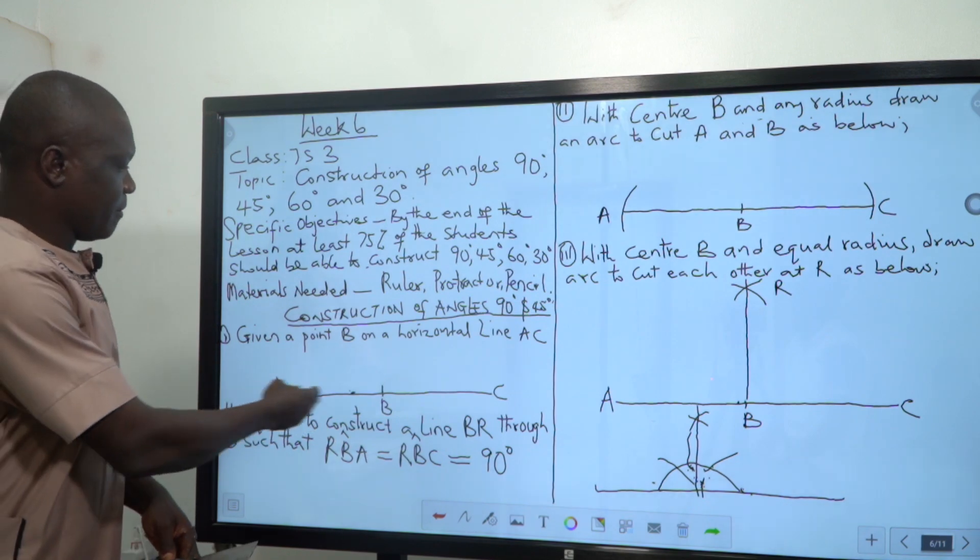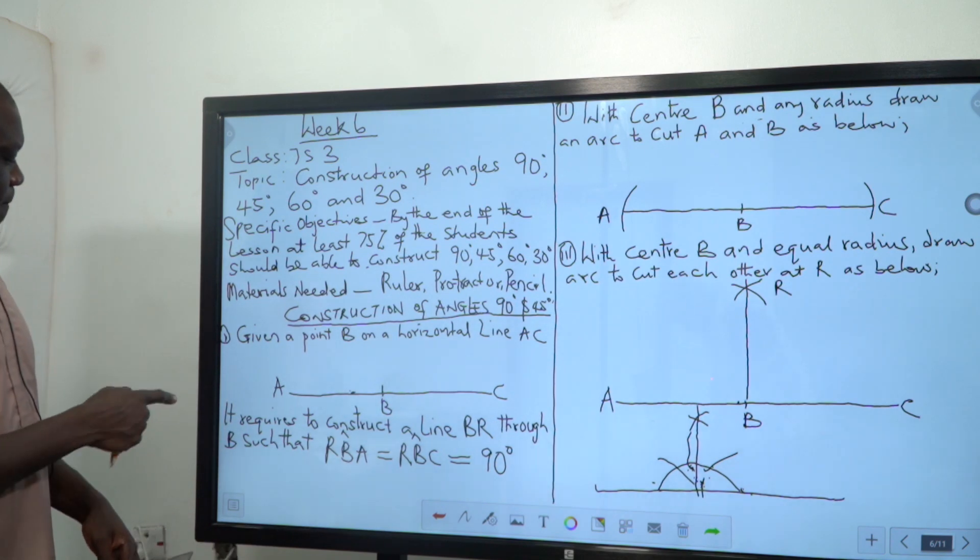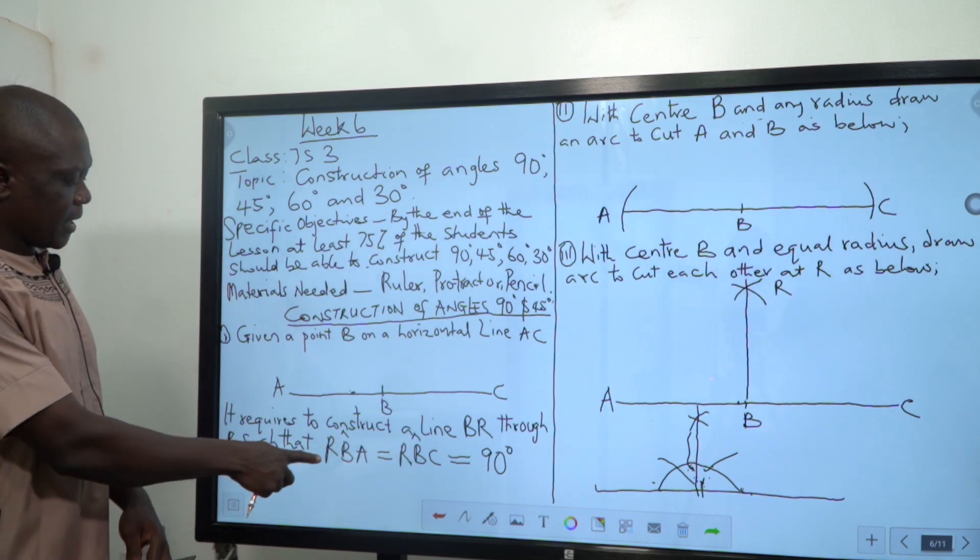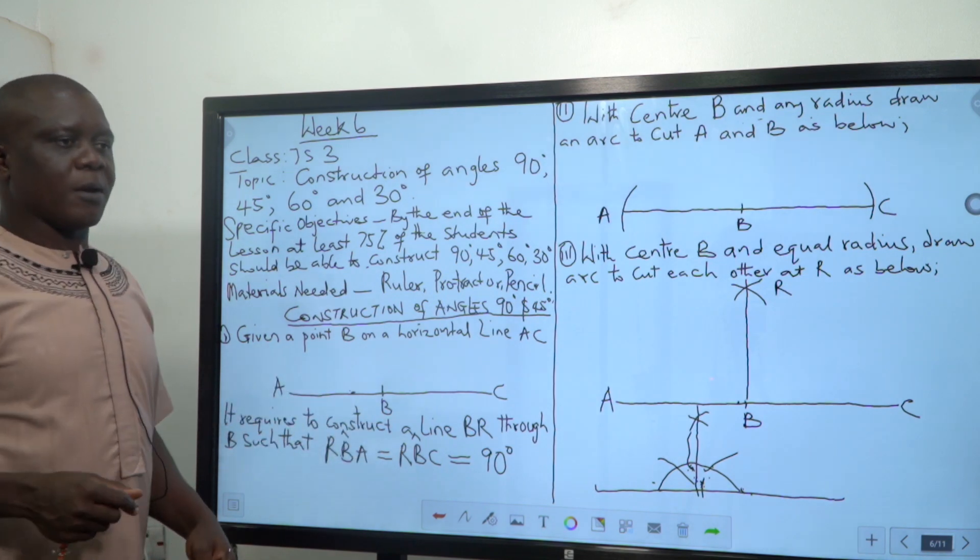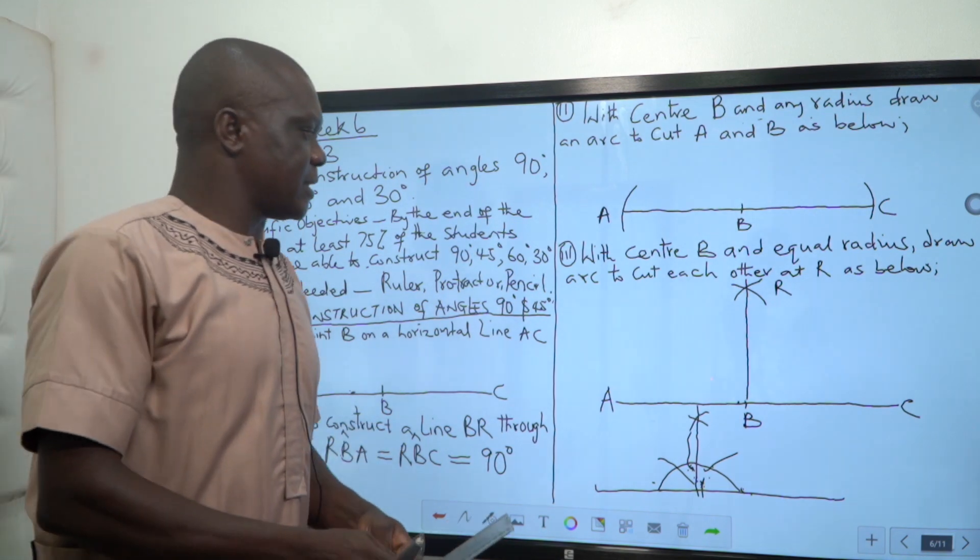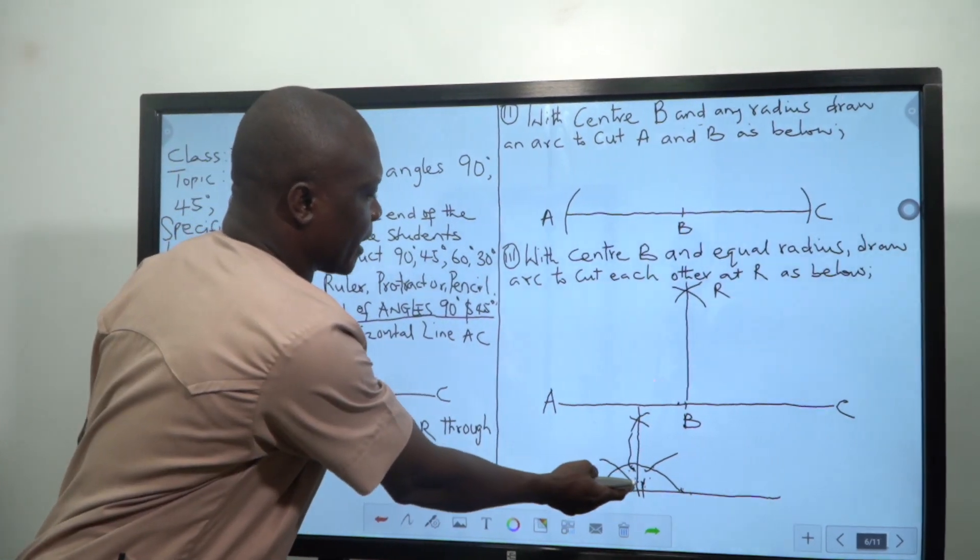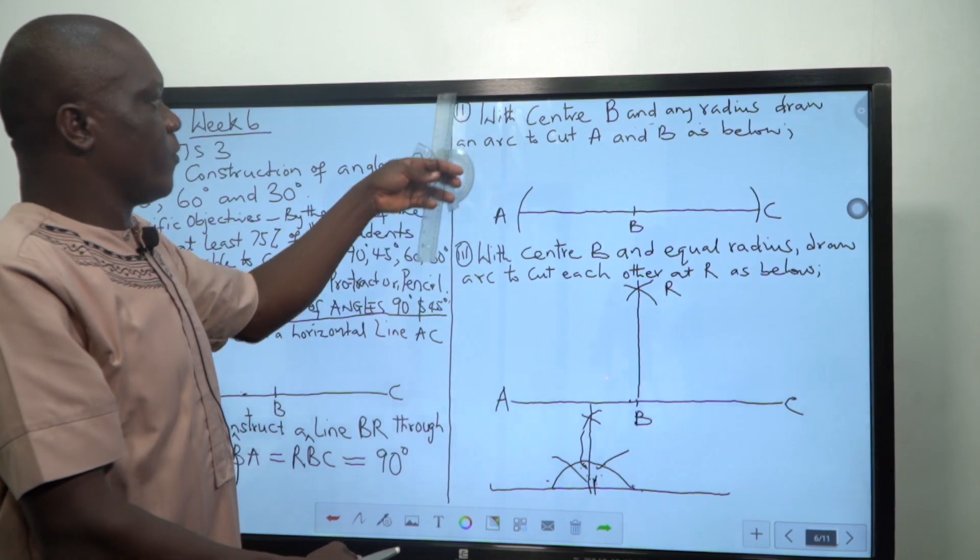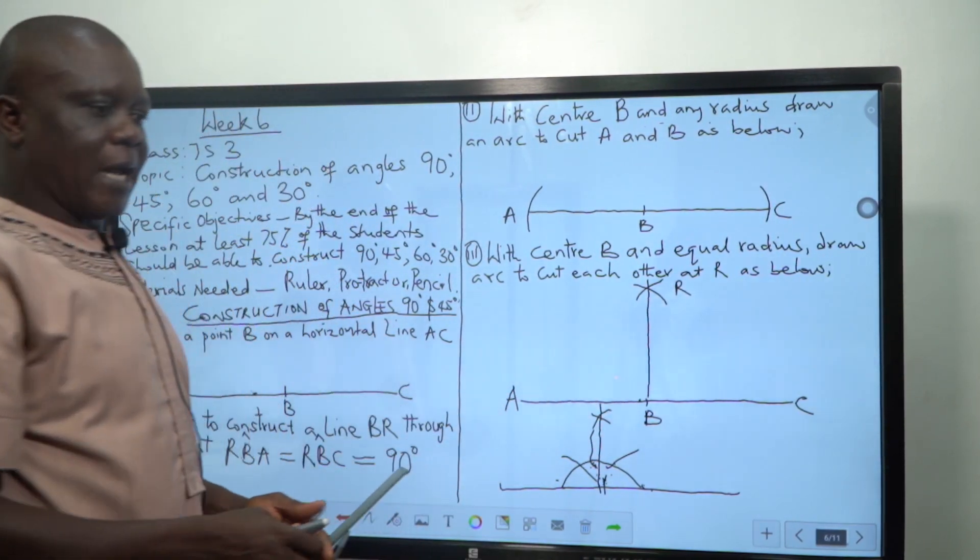You can see my line A to C. B is the middle. But what I want to do is that angle RBA will be equal to angle RBC, and that is exactly what happens here. If you feel like what I have just demonstrated, if you do it you will reach at a point like this which is now angle 90.